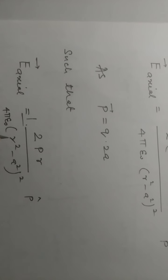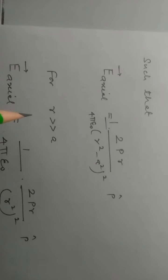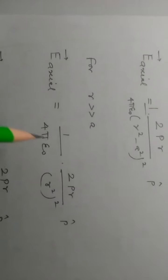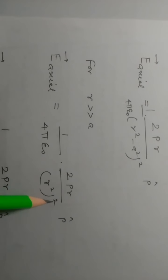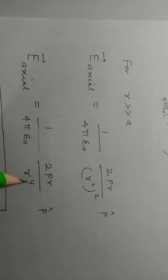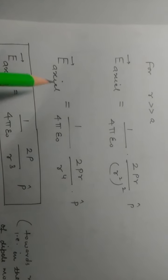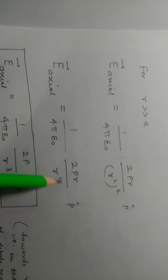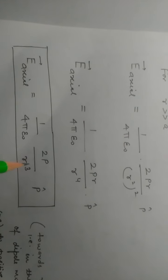As r is much greater than a — r is very large compared to a — we can neglect a squared in comparison to r squared. So remaining: 1 upon 4π epsilon times 2pr upon r squared whole squared, which is r to the power 4. Then r in the numerator and r to the 4 in the denominator cancel, leaving r cubed. So E_xl equals 1 upon 4π epsilon times 2p upon r cubed times p-hat.